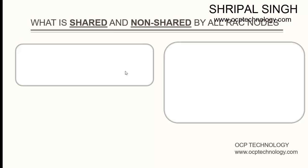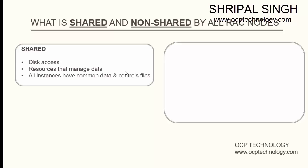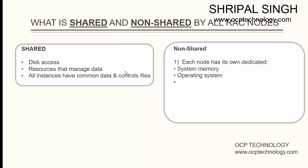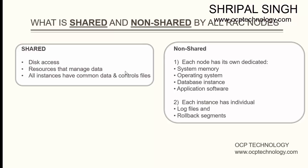What is the shared and non-shared area between all the RAC nodes? All RAC nodes share only disk access, where your database storage and resources that manage data reside. All instances have common data and control files. For non-shared objects, each node has its own dedicated system memory, operating system, database instance, and application software. Each instance also has individual log files and rollback segments.